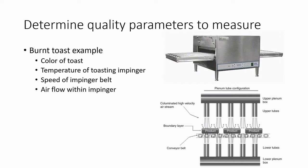We could use color swatches on a laminated card — if the toast is within a certain range it is acceptable; outside that range it's either not cooked enough or cooked too much. You could use a color meter and collect data to know that your product is scoring within one of these different categories. But that is not the only thing we should be measuring — we should perhaps also be measuring the temperature of the toasting impinger at different points.